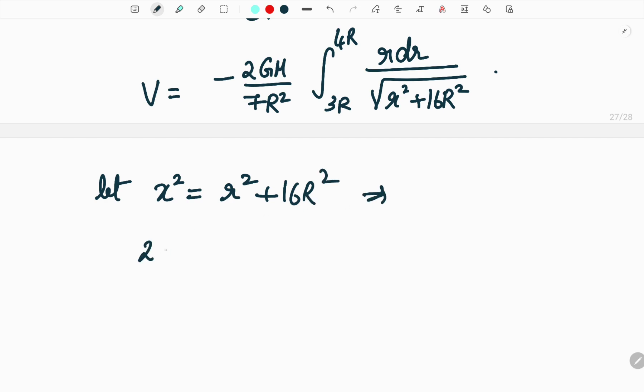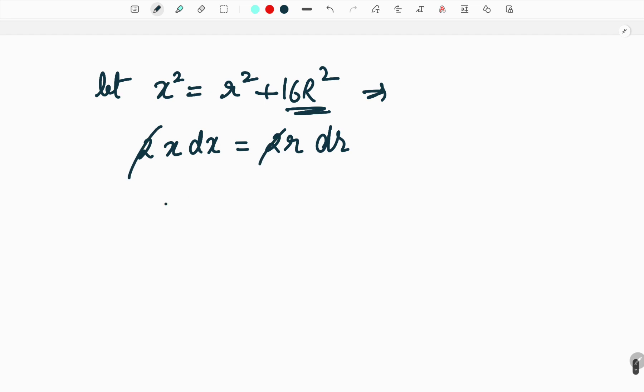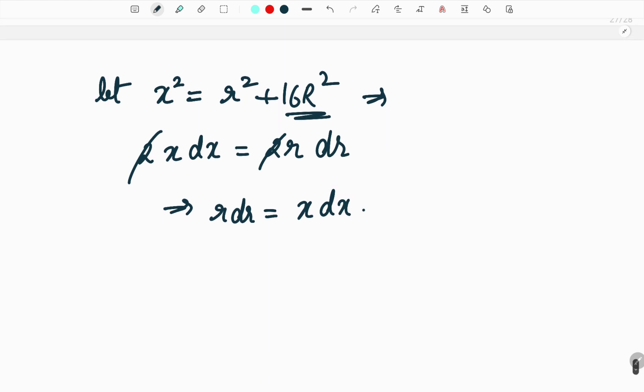So if I differentiate this what will I get? 2x dx equal to 2r dr and this is a constant so it will become equal to 0. Therefore 2 and 2 will get cancelled. So I can say that r into dr is equal to x into dx.